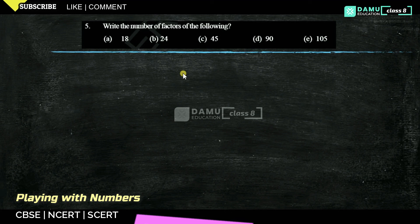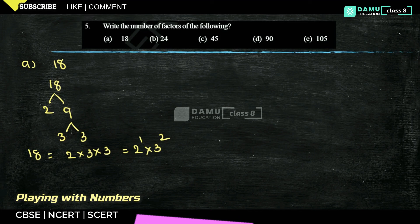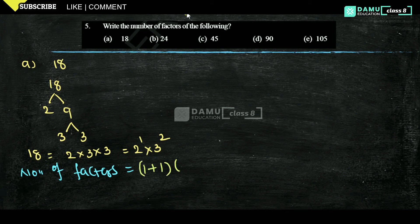Fifth question: write the number of factors of the following numbers. First, 18. Factorize: 18 = 2 × 9 = 2 × 3 × 3, which is 2¹ × 3². The number of factors formula: add 1 to each exponent and multiply. So (1+1) × (2+1) = 2 × 3 = 6 factors.